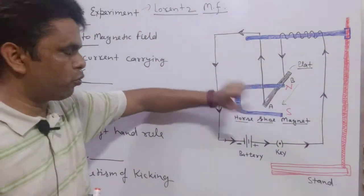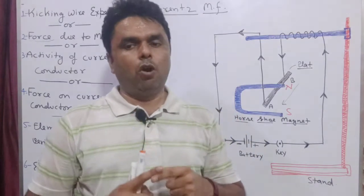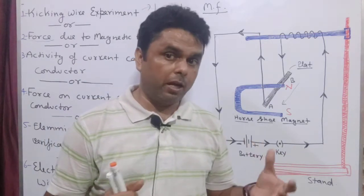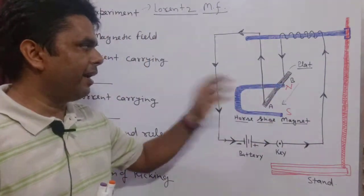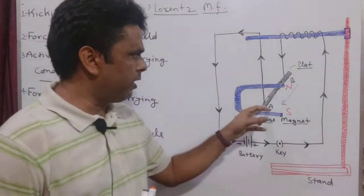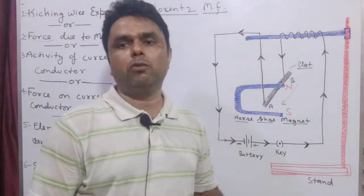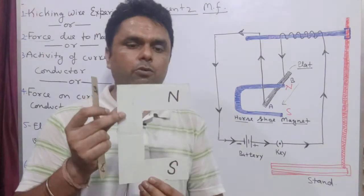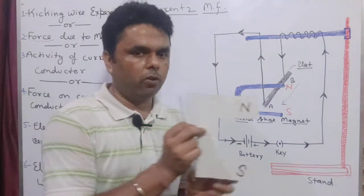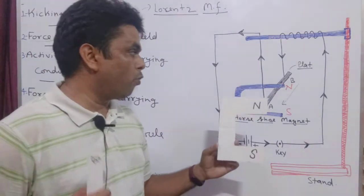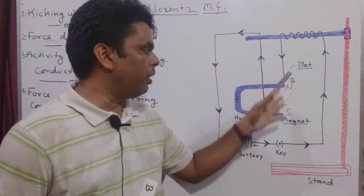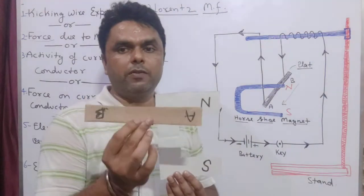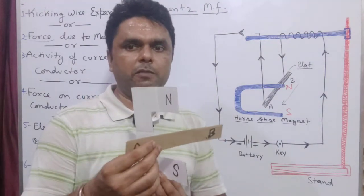Now, why do we have a horseshoe magnet? The horseshoe shape produces the highest magnetic field strength in a specific region. We want to see what happens to our AB conductor in this high-strength magnetic field. The position of AB is perpendicular to NS — that is, perpendicular to the magnetic field going from north to south — and inside we have inserted AB, which is a rod, as our conductor.